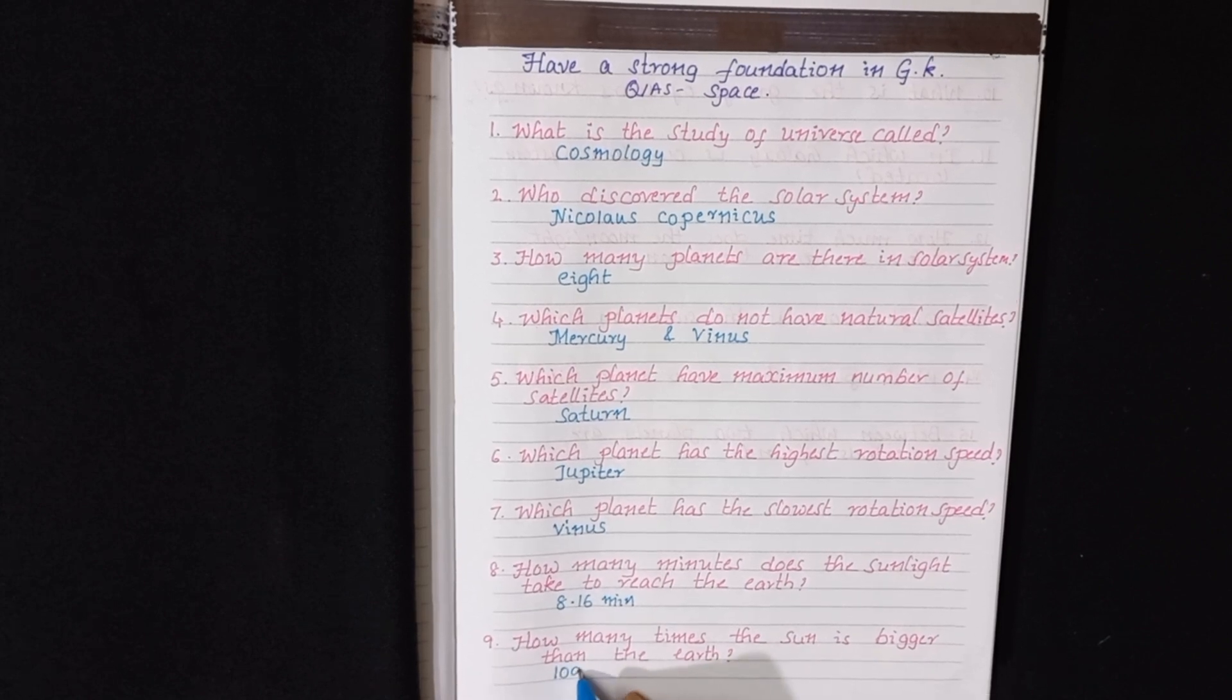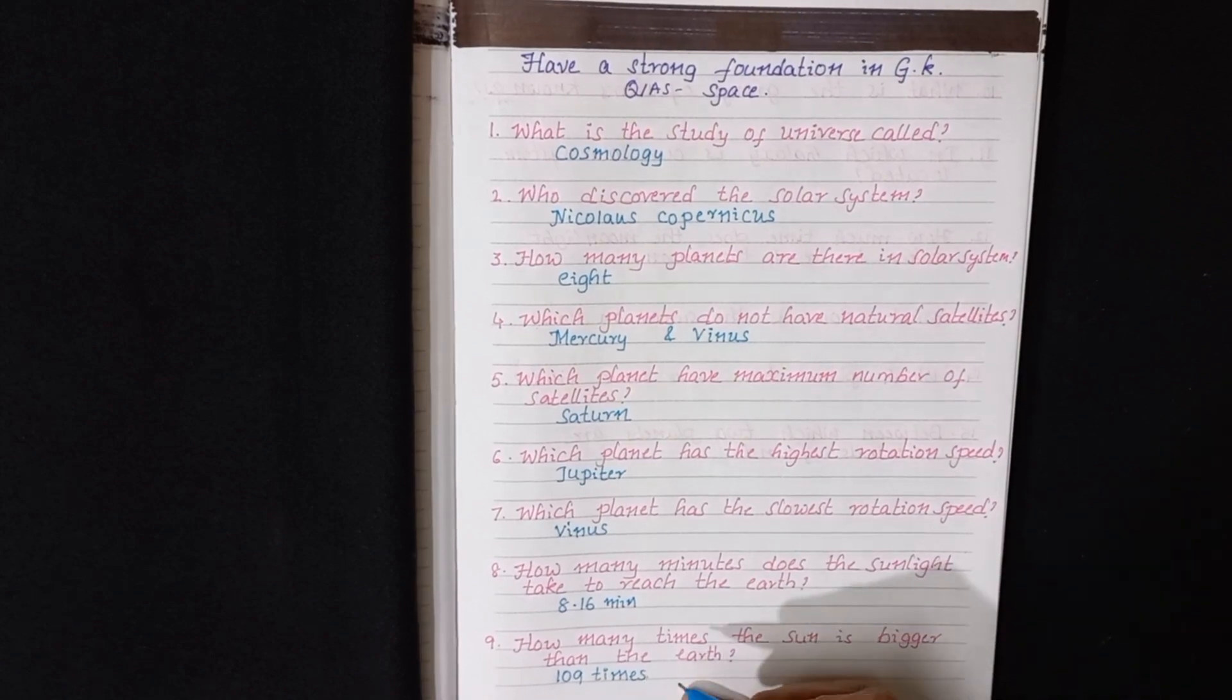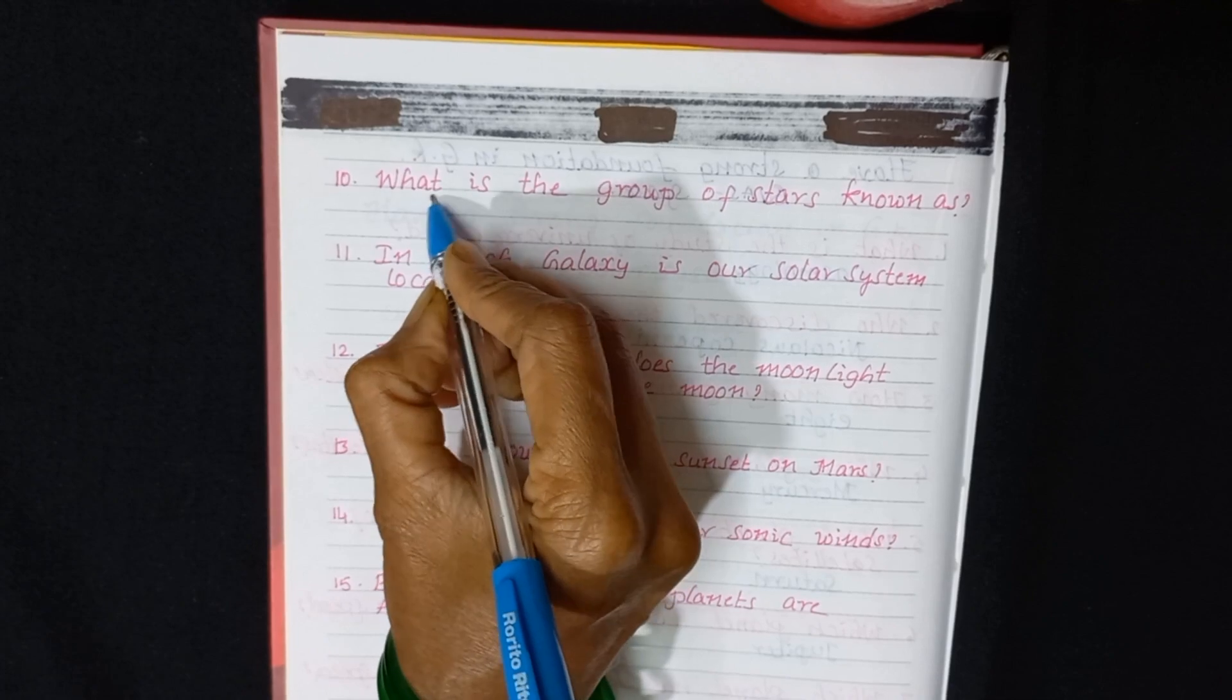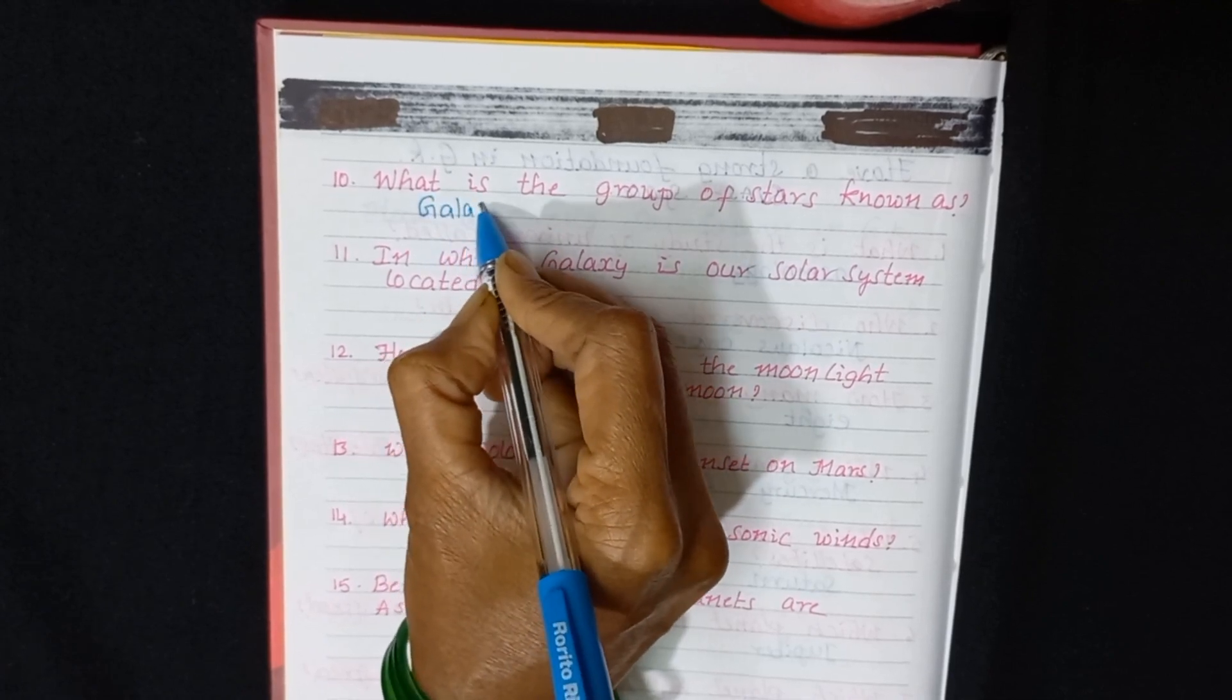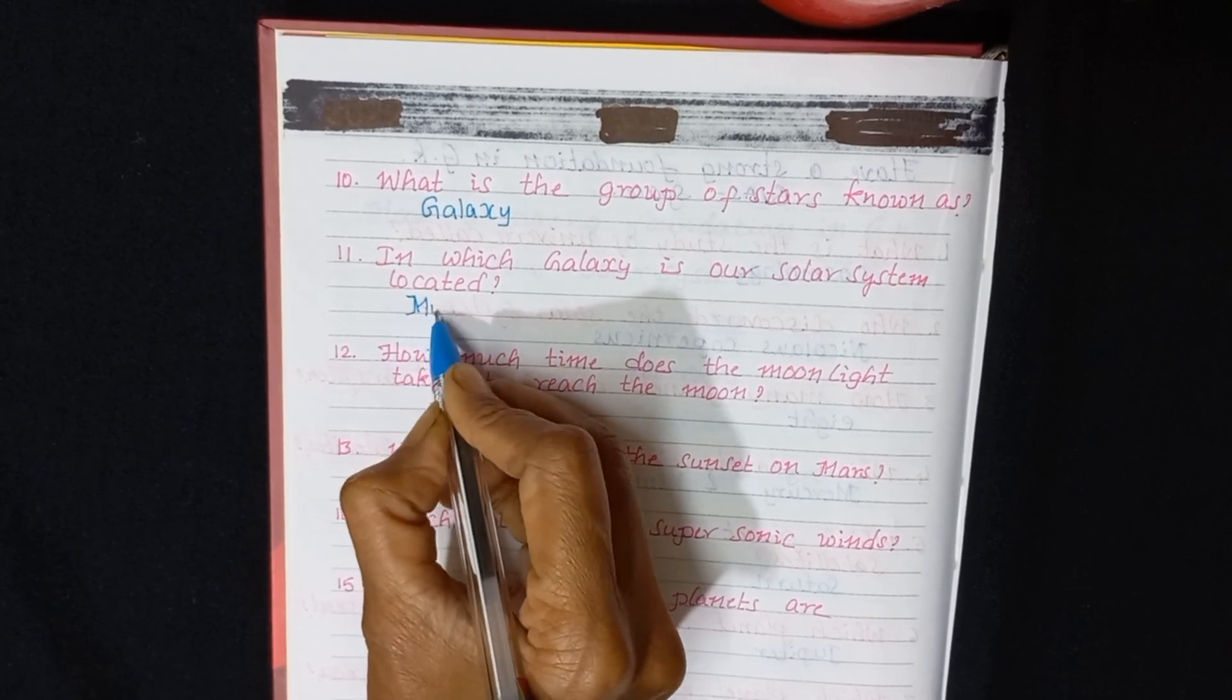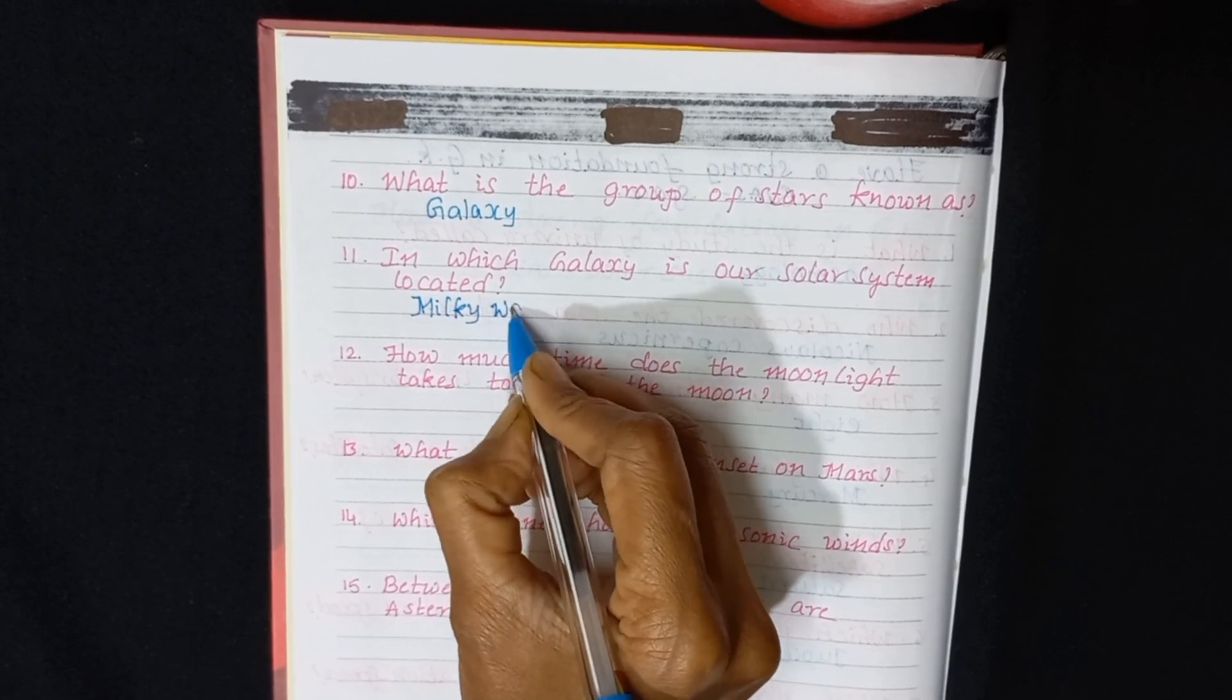How many times is the sun bigger than the earth? 109 times. What is the group of stars known as? Galaxy. In which galaxy is our solar system located? Milky Way.